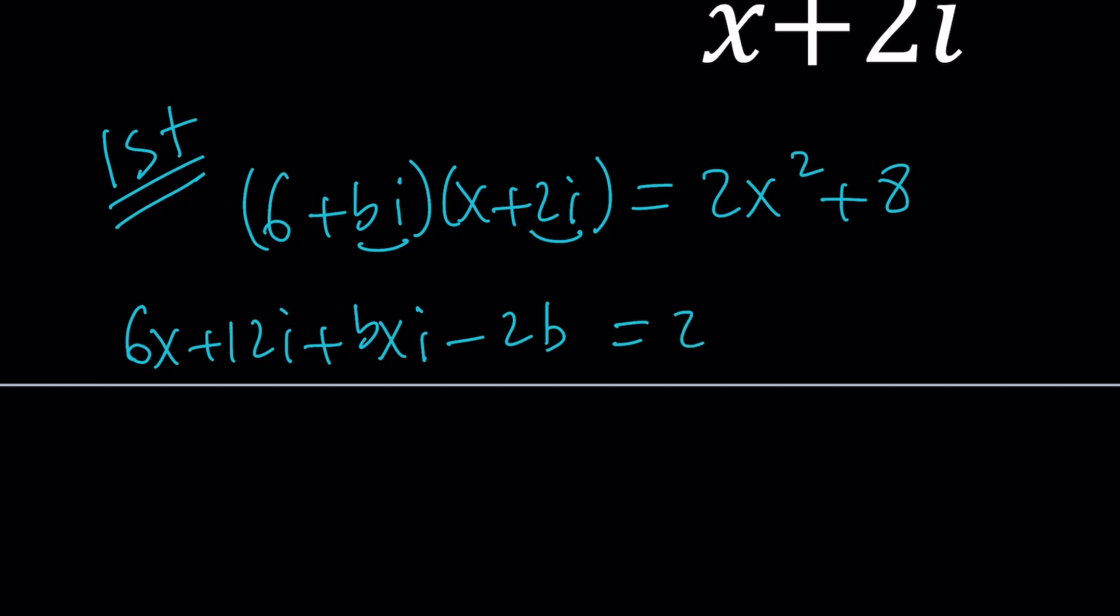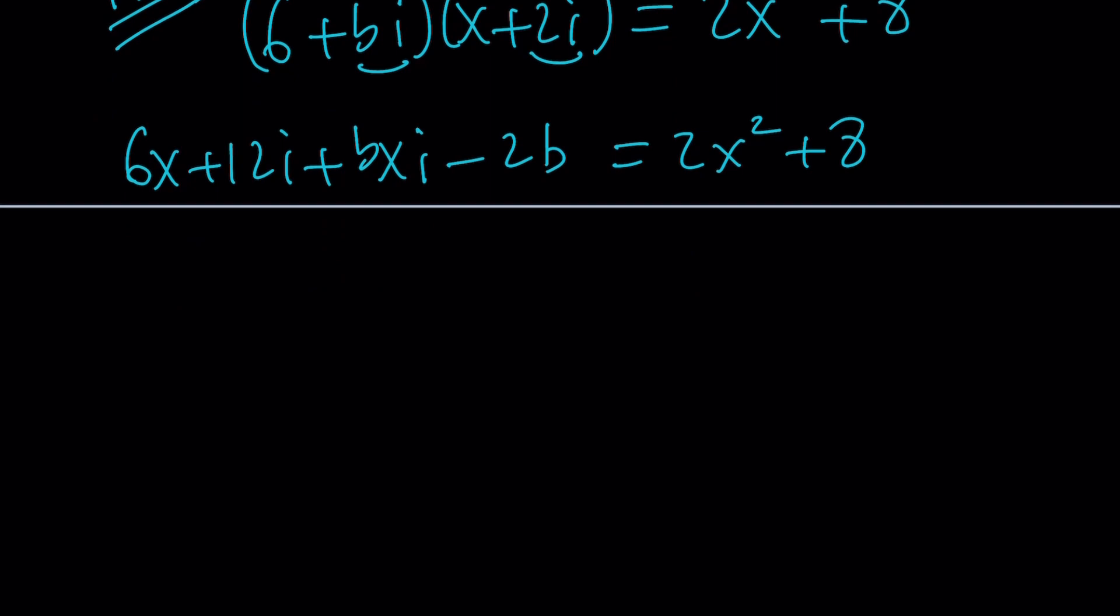And that equals 2x squared plus 8. Now let's set the real parts equal to real parts, and same thing for the imaginary parts. 6x minus 2b plus 12 plus bx, that's going to be the imaginary part, equals 2x squared plus 8.